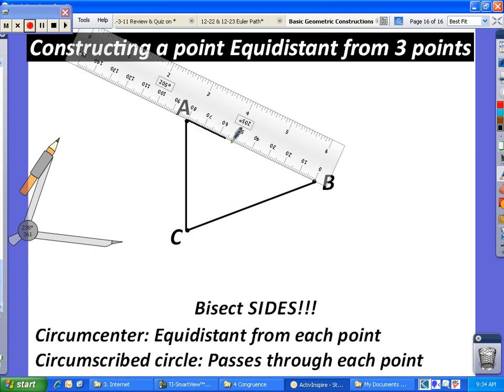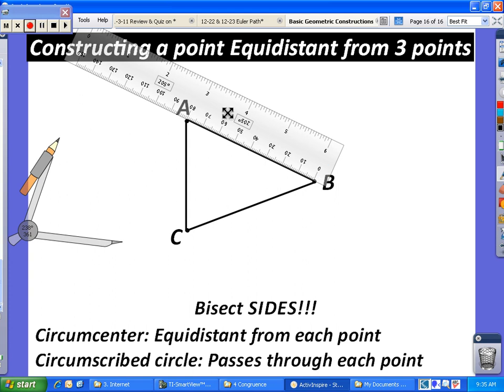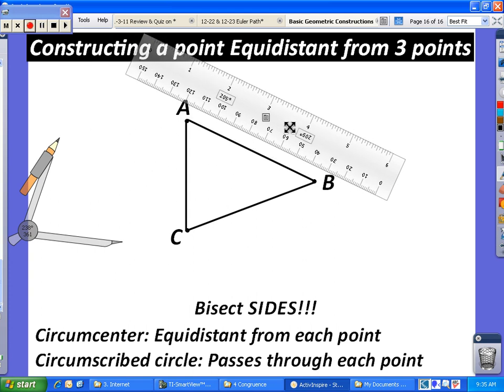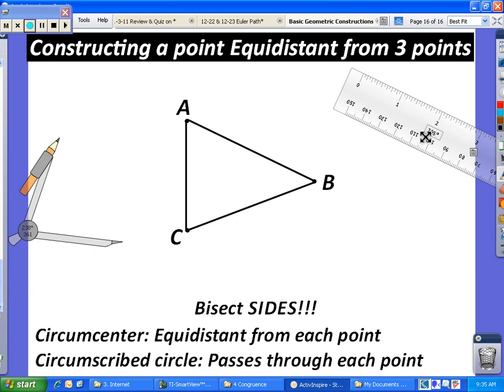This can be used for any of the constructions where you want to find a point equidistant from three points. Now, I am going to bisect my sides, which now is just a perpendicular bisector.